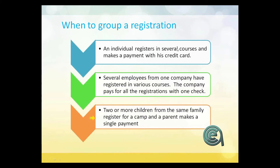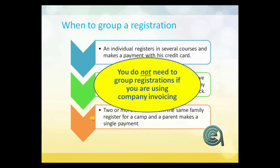The idea of multiple courses, multiple people, one payer — where payment is being made at the time by credit card or check — is generally when you want to deal with grouping. If you're using company invoicing, which is an optional module, I would recommend not doing grouping — it's simpler to just bill everything to the company and let the company invoicing system group those together for you.